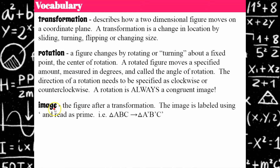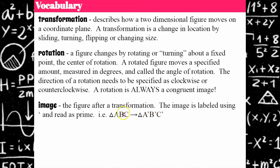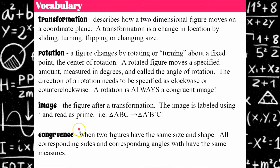Let's review the term image — that is a figure after transformation. When we transform the original figure, we refer to the new figure as the image, and we label it using prime notation. So triangle ABC has been transformed to triangle A'B'C', telling whoever's looking at your work that this is the transformed figure and this is the original. Congruence is when two figures have the same size and shape, and all corresponding sides and angles have the same measures.